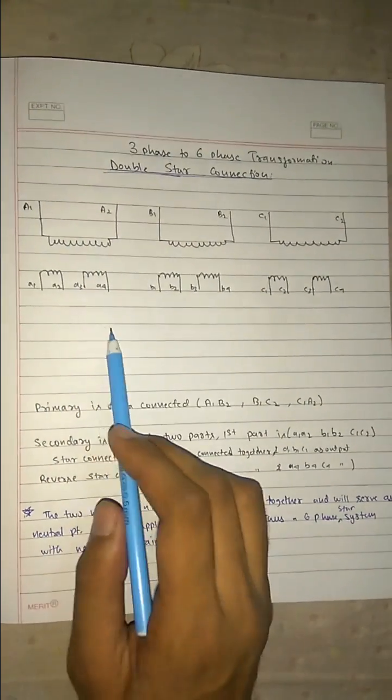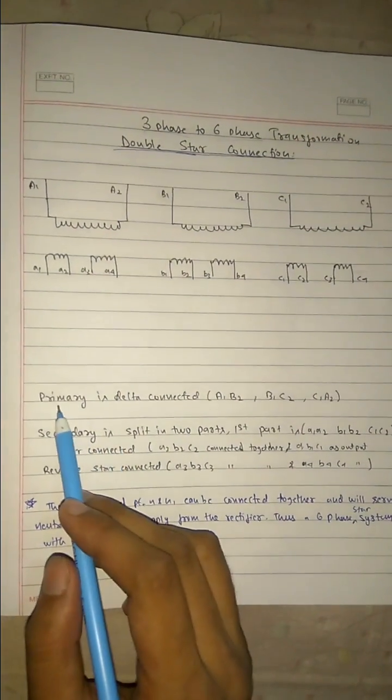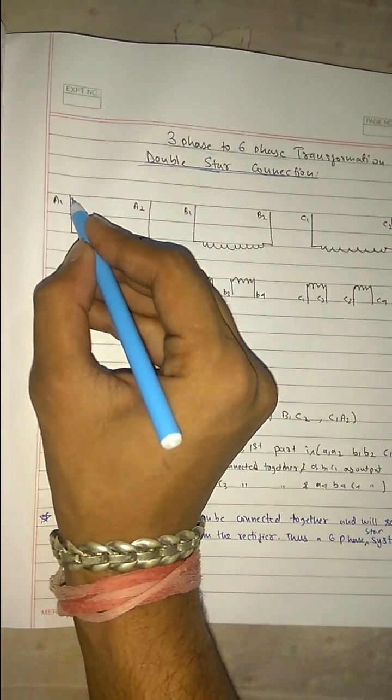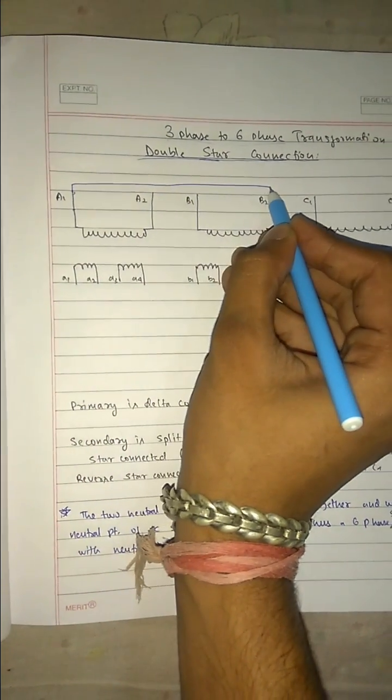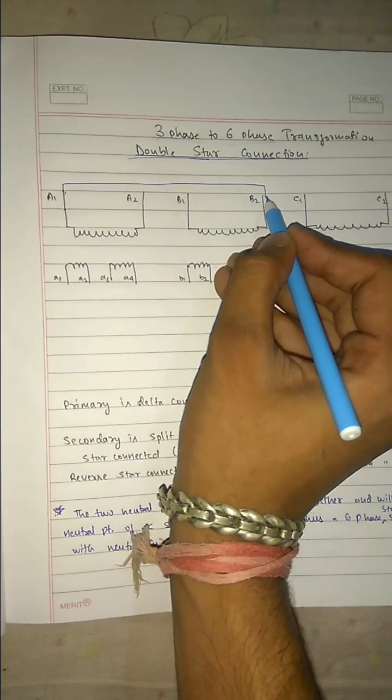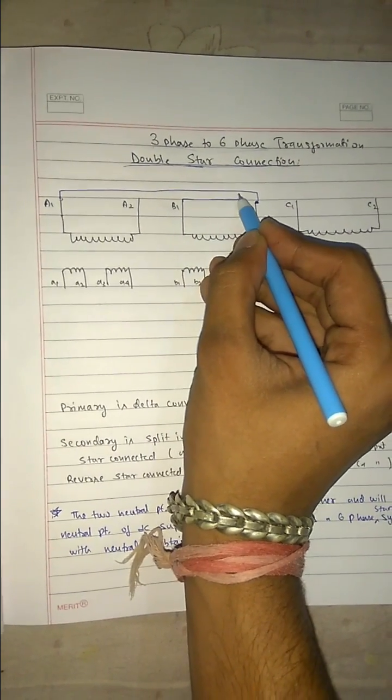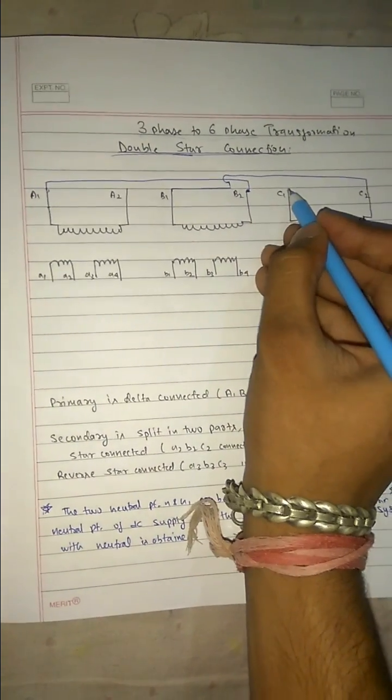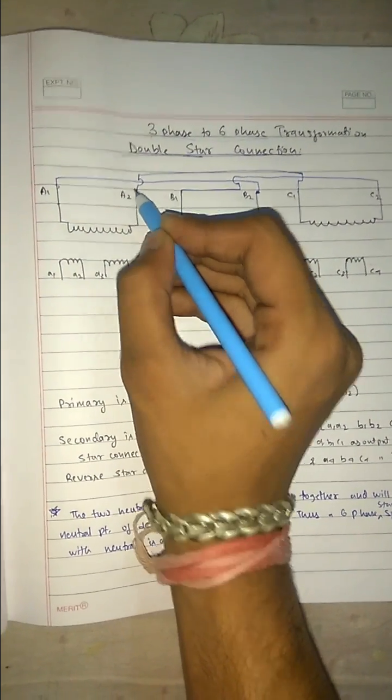These 3 are delta connected and these 3 are star connected. Let's do it step-wise. Primary is delta connected. That is, a1 is connected to b2, b1 is connected to c2, and c1 is connected to a2.